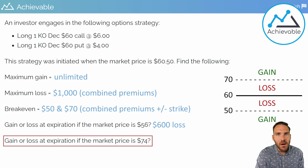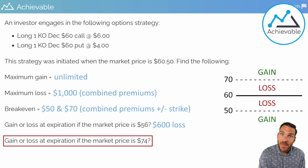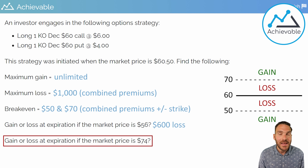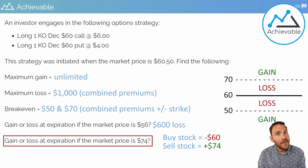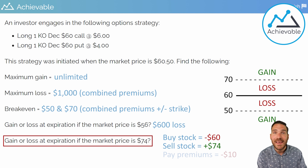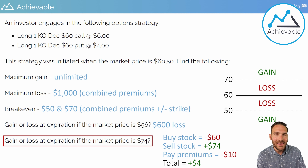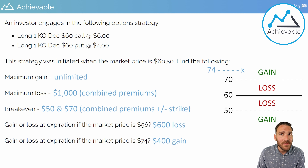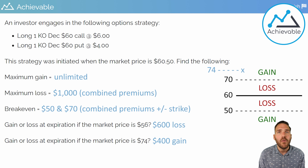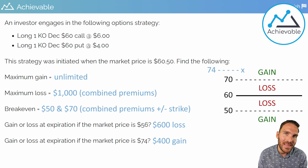What would be the gain or loss at expiration if the market price is at 74? Is the put in the money? No. Is the call in the money? Yes — market price is above 60. The call gives the investor the right to buy stock at 60 and sell at 74, a $14 gain per share. That $14 gain is offset by the $10 per share paid up front for both premiums, leaving a $4 per share gain or $400 overall. You can also use the visual: 74 is four points above the 70 break-even, confirming a $400 gain. If you approach questions this way, you should consistently get straddle questions right.